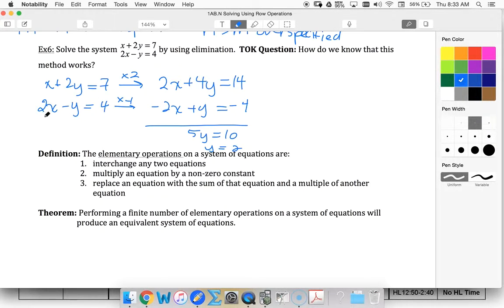Alternatively, I could have multiplied my bottom equation by 2 and left the top equation alone. So if I had done that, I would have had the system x plus 2y equals 7, and then 4x minus 2y equals 8.